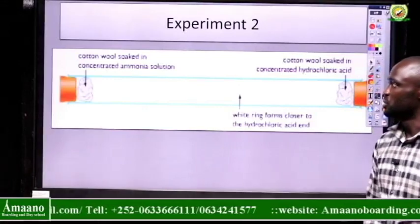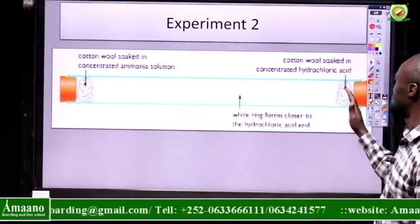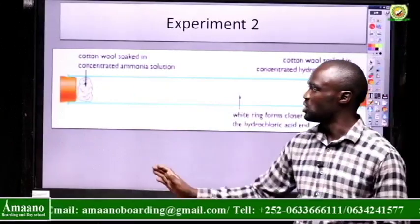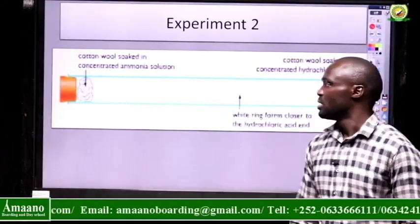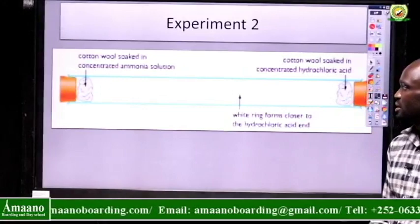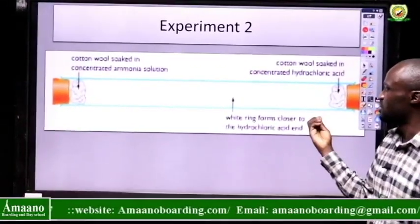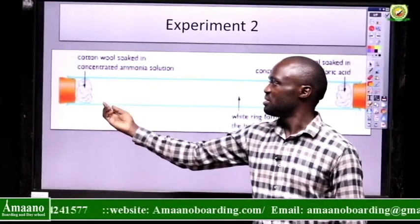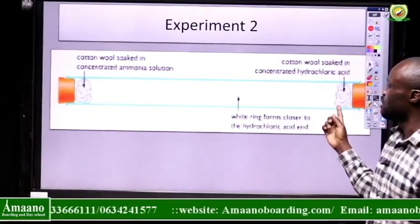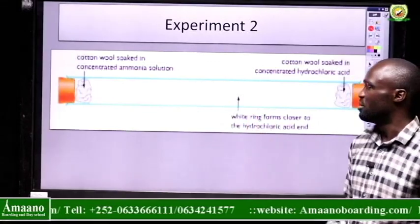Now we come to experiment two. Here we use a glass tube with two open ends. I take a cotton wool, soak it in concentrated ammonia solution, and place it at one end, closing it with a rubber bung. Then I take another cotton wool, soak it in concentrated hydrochloric acid, place it at the other end, and close with a rubber bung. The hydrochloric acid acts as a source of hydrogen chloride gas. The gases begin diffusing through the tube — ammonia diffusing in one direction and hydrogen chloride in the other. When they meet, they react and form a white ring of ammonium chloride.